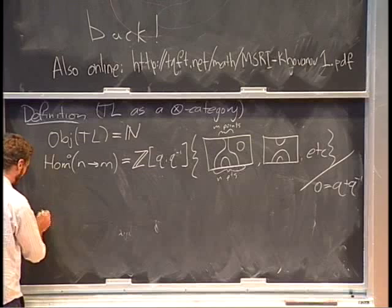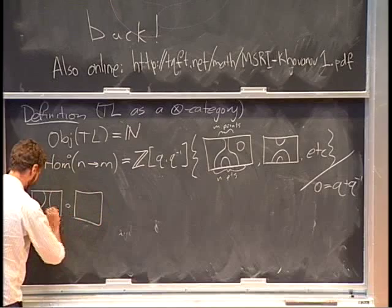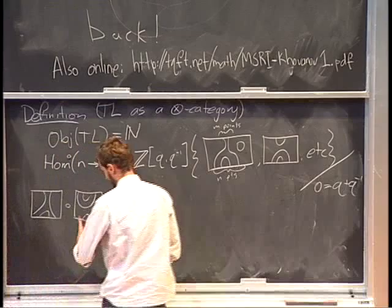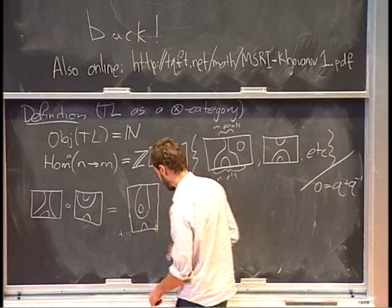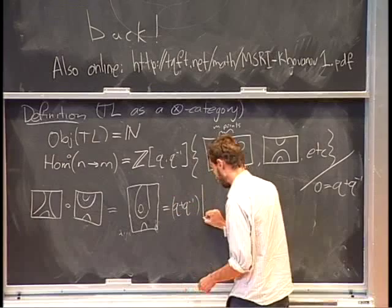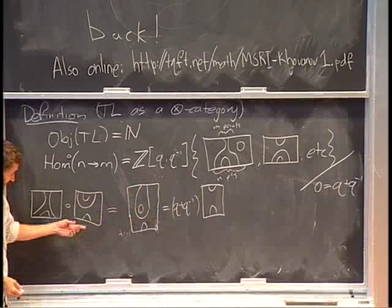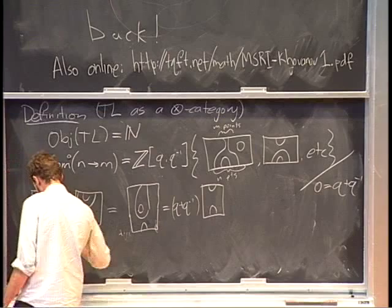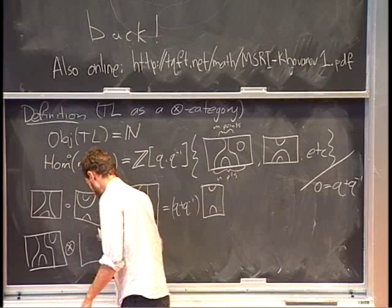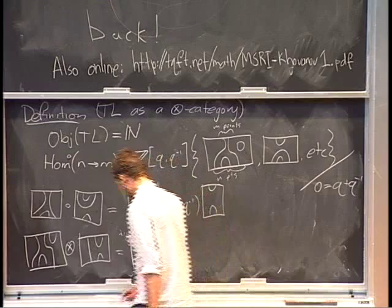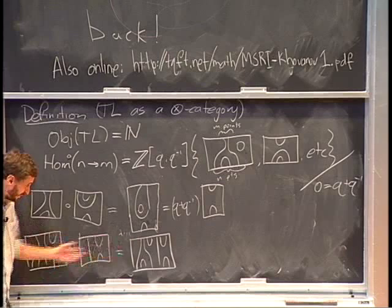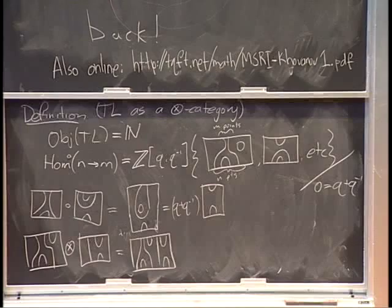To compose, you stack diagrams on top of each other and remove circles, replacing each with a factor of q plus q-inverse. You can see that we end up with a hom from 2 to 2 by composing a hom from 2 to 4 with a hom from 4 to 2. Tensor product is just sticking diagrams side by side — we never produce circles that way.